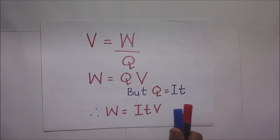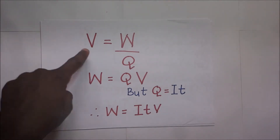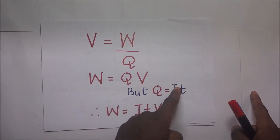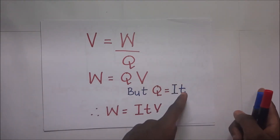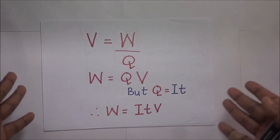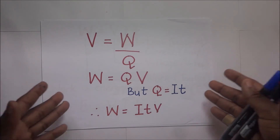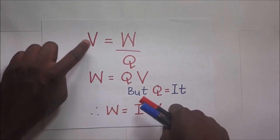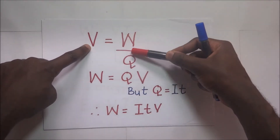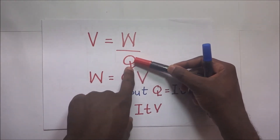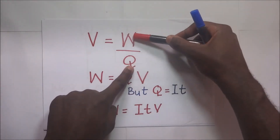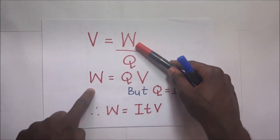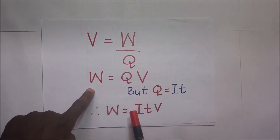In order to derive the expression for electrical energy and power, we begin from the definition of potential difference. Potential difference is the work done in moving a charged particle from one point to another. The work that is being done is what we are calling potential difference. Mathematically, potential difference is the work done per coulomb — V = W/Q, where Q represents charge. Rearranging this, work is equal to Q times V.